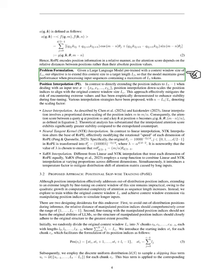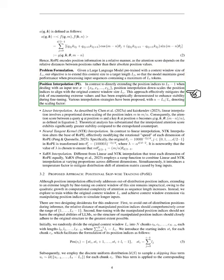Now, let's move on to the problem we're trying to solve. We have a large language model trained with a context window size of L_C. Our goal is to increase this to a target length L_T so that the model can handle input sequences with up to L_T tokens while still performing well. To achieve this, we use position interpolation, or PI, which scales down the position indices to align with the original context window size L_C, helping avoid extreme values and improving stability during fine-tuning.